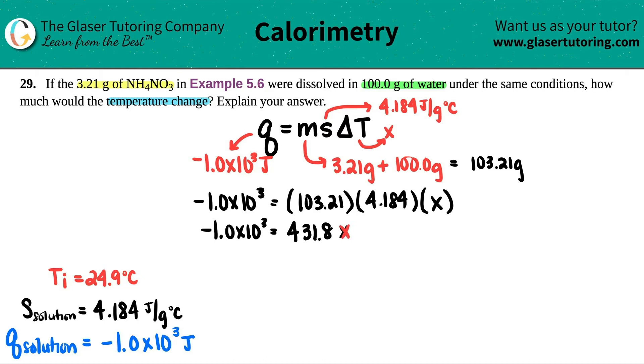Solve for X. We're going to divide by 431.2 divided by 431.8. And that will get us our delta T.